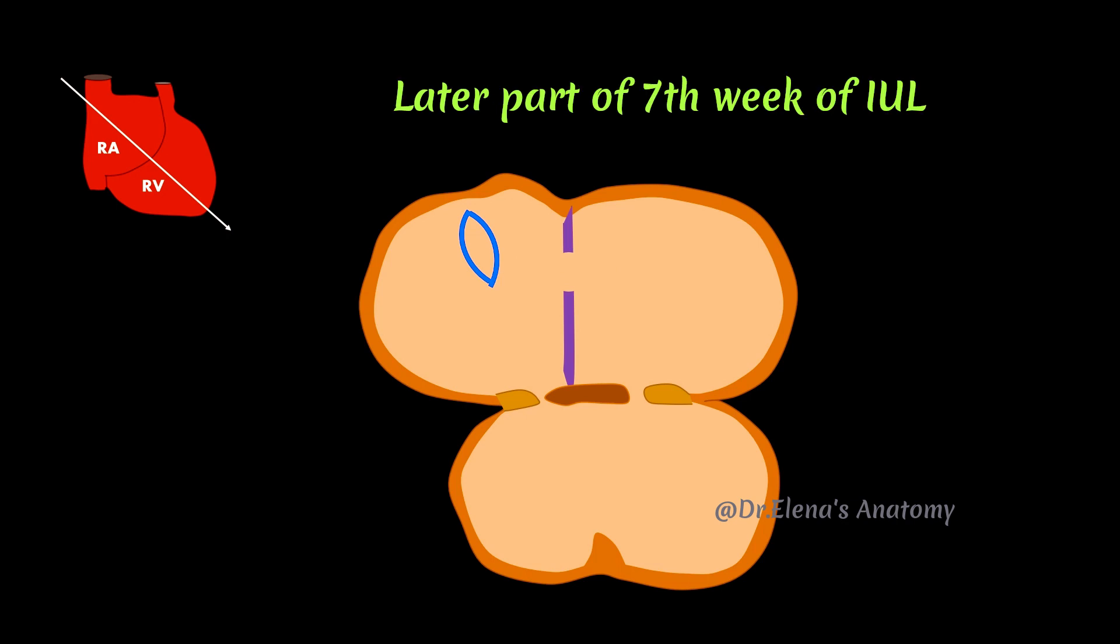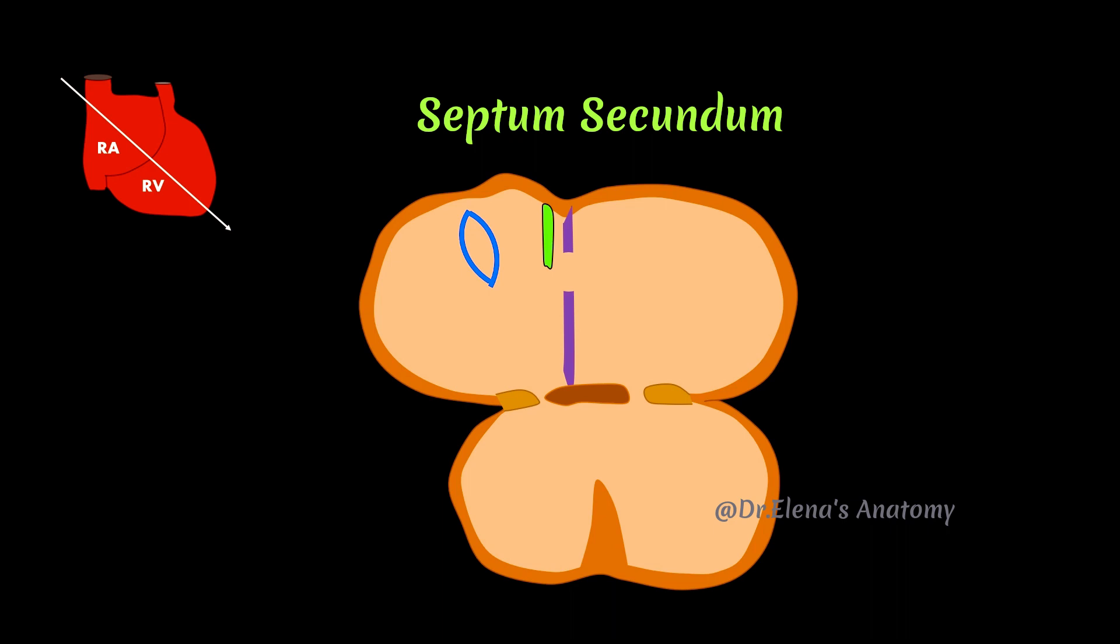During the later part of seventh week of intrauterine life, another septum called septum secundum grows from the right side of septum primum from the roof of right atrium. The caudal edge is free and sickle-shaped.